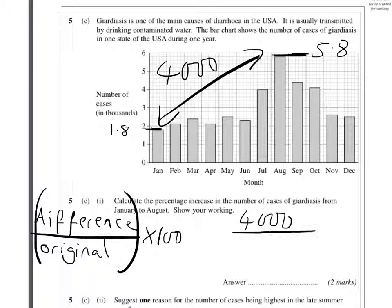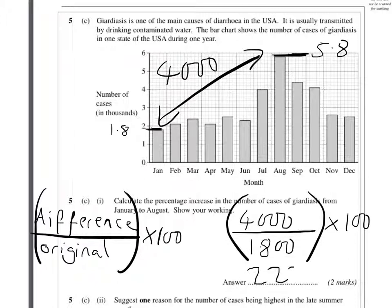The original value is 1,800. And if you multiply that by 100, I'll just put it in the calculator: 4,000 divided by 1,800 multiplied by 100, and the answer is 222.2%.